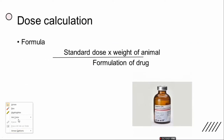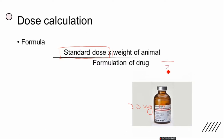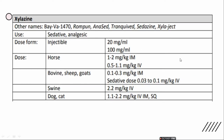Here is the particular formula for calculating the dose. The standard dose is a universal tool — sometimes recommended by the manufacturer and sometimes by the FDA — indicating how much of an anesthetic drug to use without exceeding the limit. It depends on the weight of the animal. We also need to know the drug formulation; for example, xylazine 2% equals 20 mg per ml.